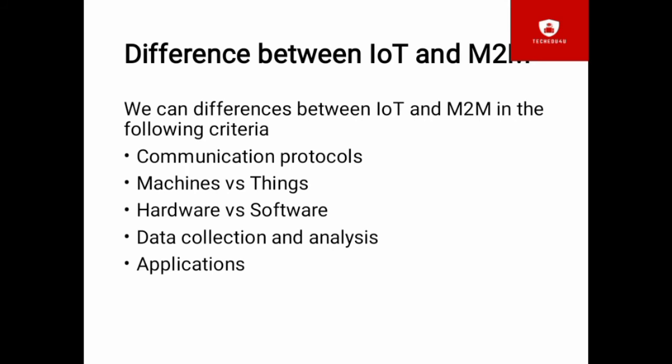Machines versus Things - M2M systems have homogeneous machine-type systems within the M2M area network. But IoT refers to the physical objects that have unique identifiers. They can sense and communicate with their external environment.